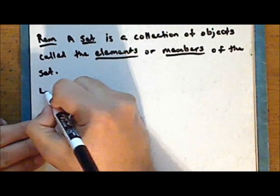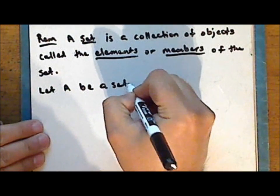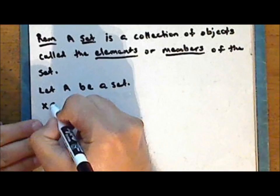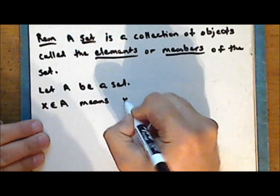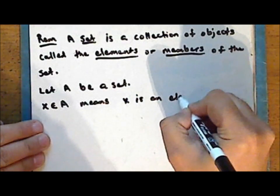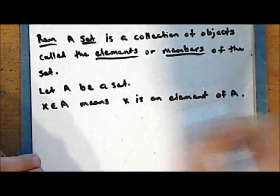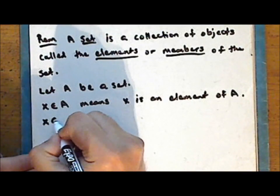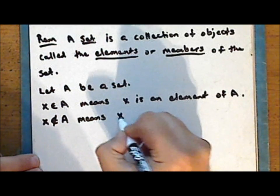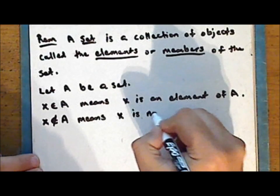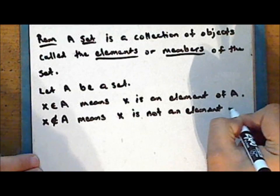So let A be a set. The notation x ∈ A means that x is an element of the set A. And the notation x ∉ A means that x is not an element of the set A.